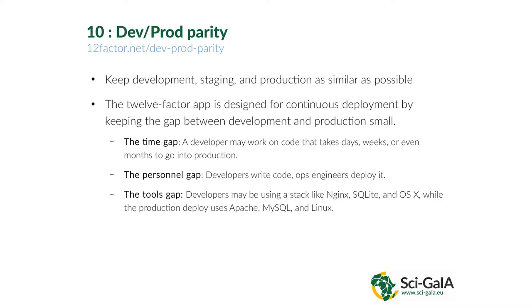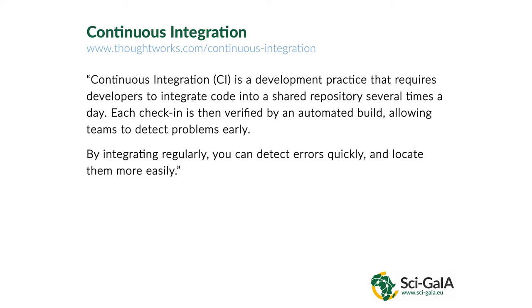We've gone to a lot of trouble to ask you to express what your stack is, and to simulate the production environment where your application will run so that you can test the application in development in the same way as it will run in production. That's all we have to say about the 12-factor applications — I've highlighted the 10 most important ones. We're going to move on now to a practice called continuous integration.